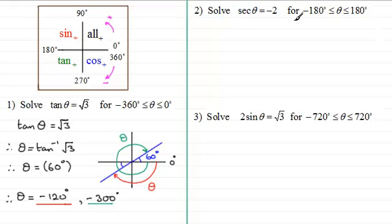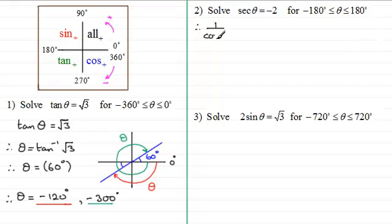For the second question, solve sec theta equals minus 2, for theta between minus 180 and 180 degrees inclusive. This is a very common range. Since sec theta equals 1 over cos theta, we have 1 over cos theta equals minus 2. Rearranging — multiplying both sides by cos theta then dividing by minus 2 — gives cos theta equals minus one half.